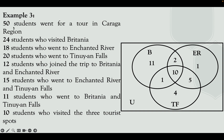It's stated that 50 students went on the tour in Caraga region. Let's check if the total equals 50. Adding all values: 10 plus 5 plus 1 plus 2 plus 4 plus 1 plus 11 equals 34 students in all. Since the total is 50, we compute 50 minus 34, giving 16 students who did not go to Britannia, Enchanted River, or Tinuy-an Falls. Place this value inside the universal set but outside all circles.